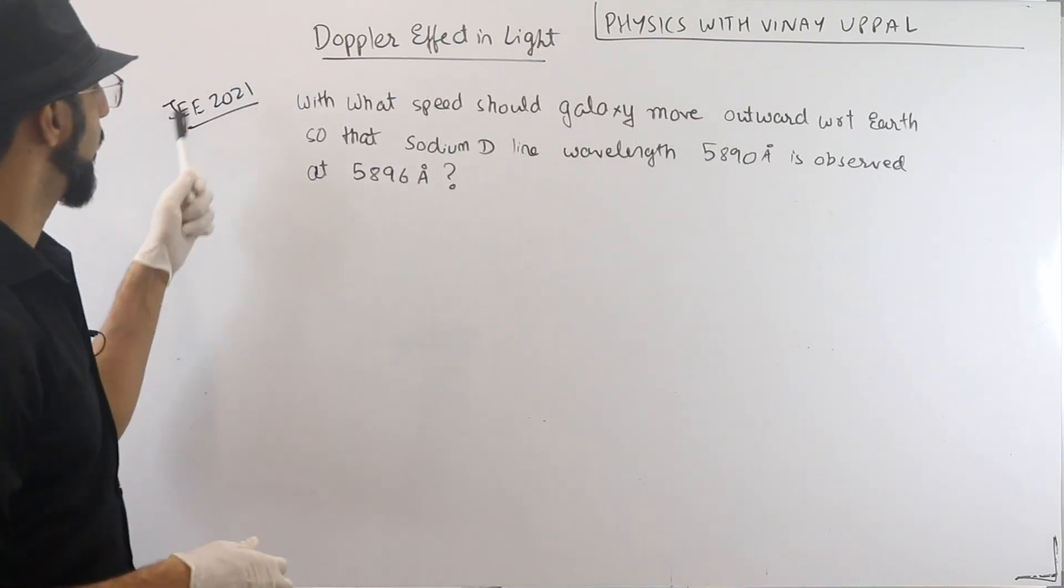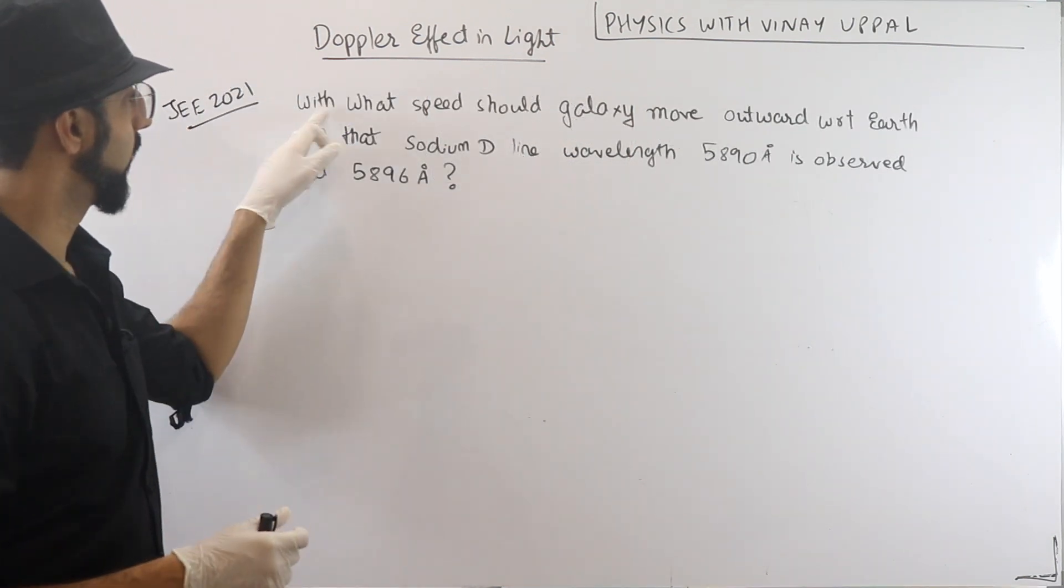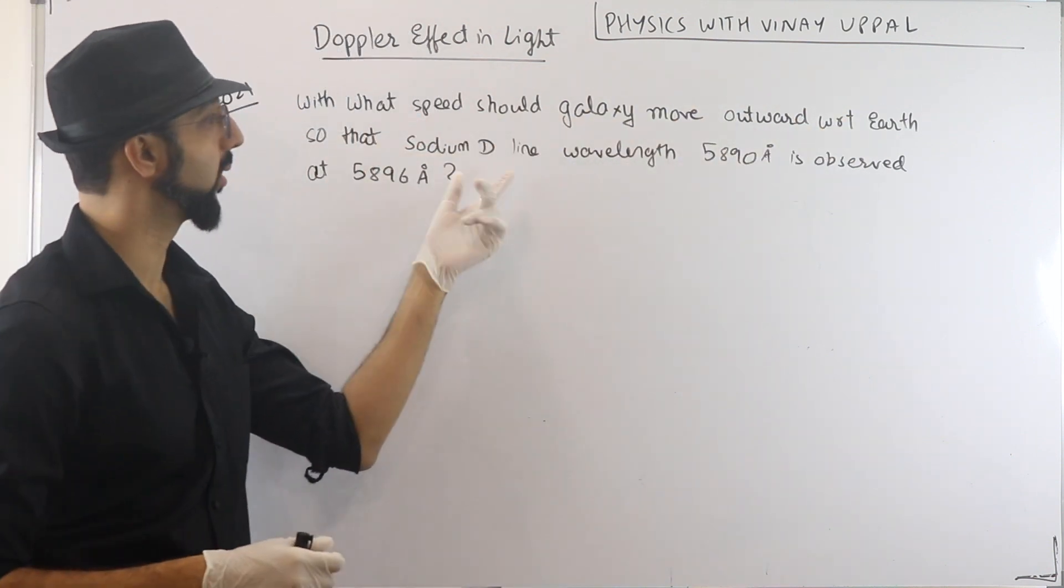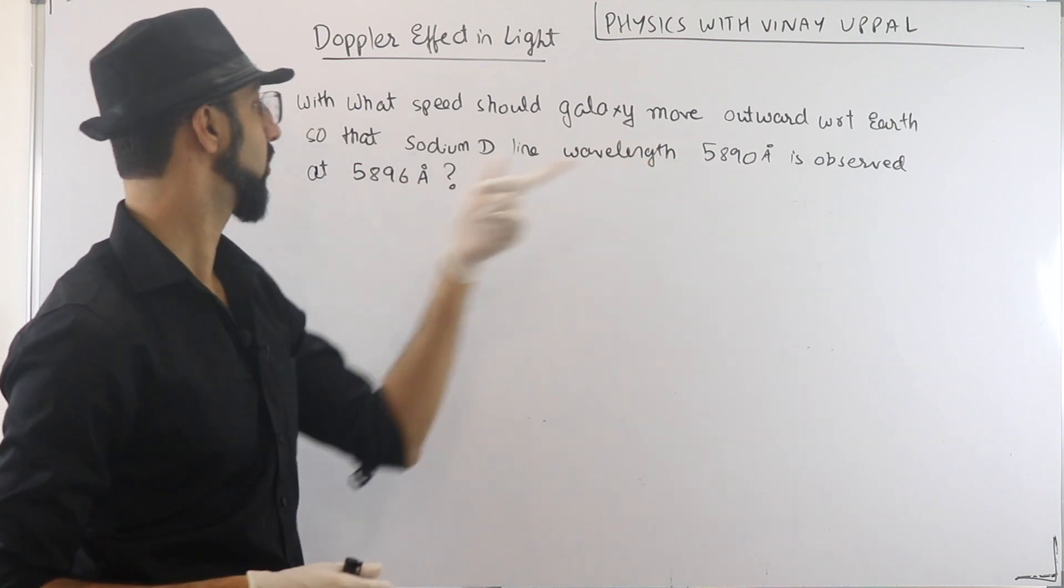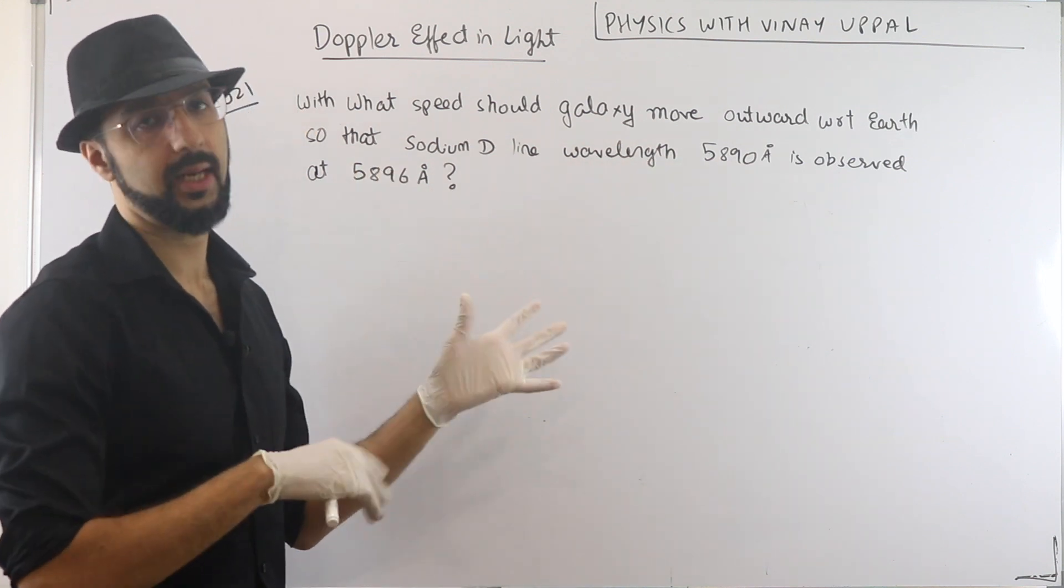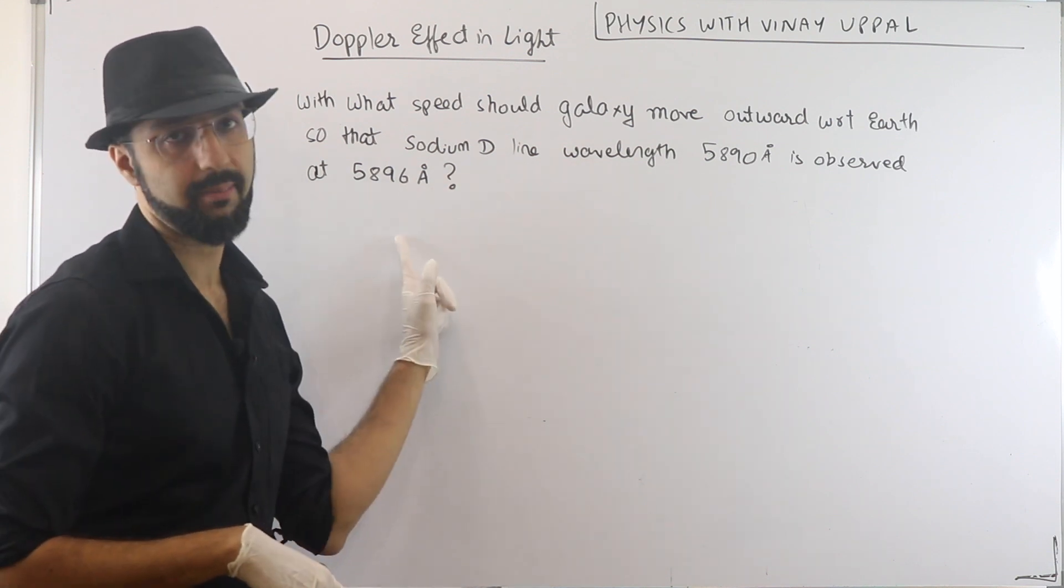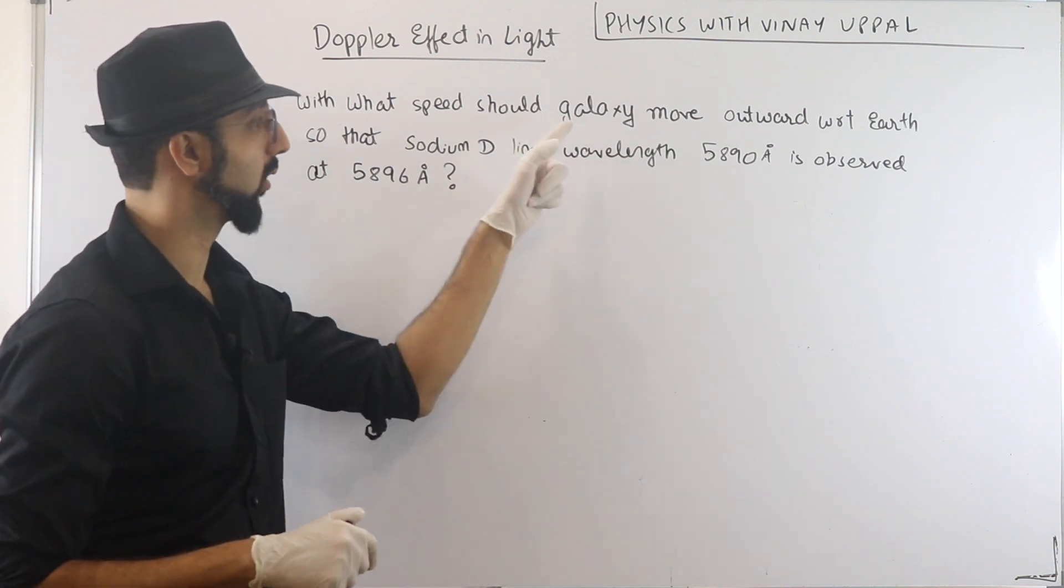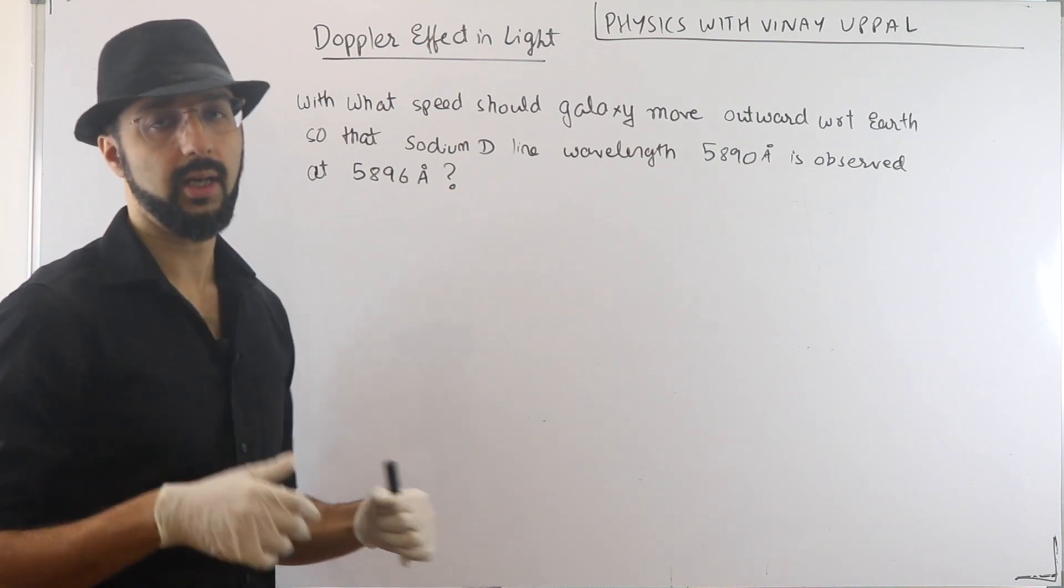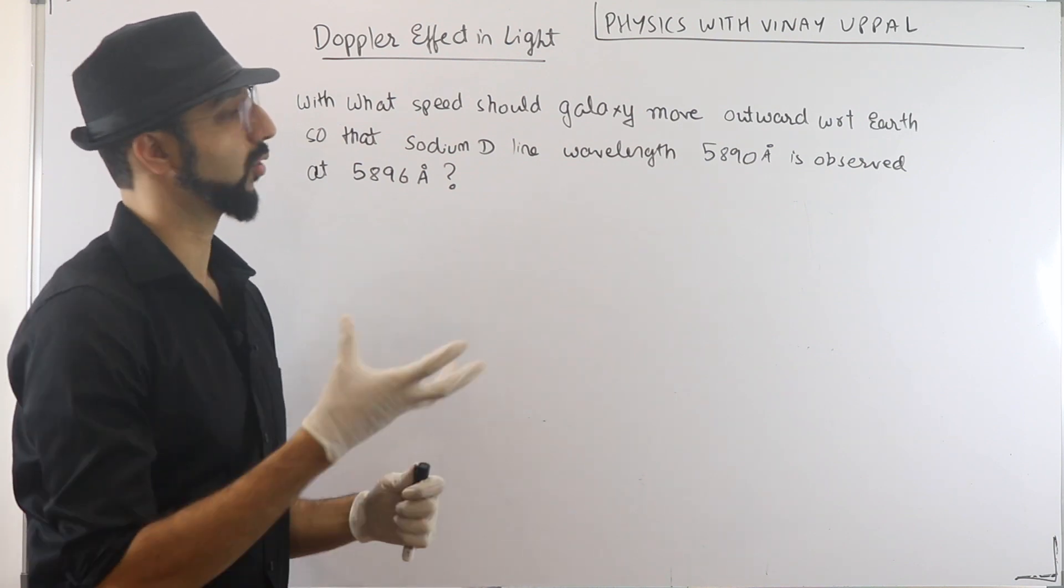So we will ask one more question. Now let's try JEE 2021: with what speed should a galaxy move outwards with respect to Earth so that the sodium D-line wavelength this much is observed at this wavelength. So it seems complicated, a galaxy is a sodium D-line. Nothing. Just a wavelength is changing because of the velocity of the source, velocity of the galaxy.